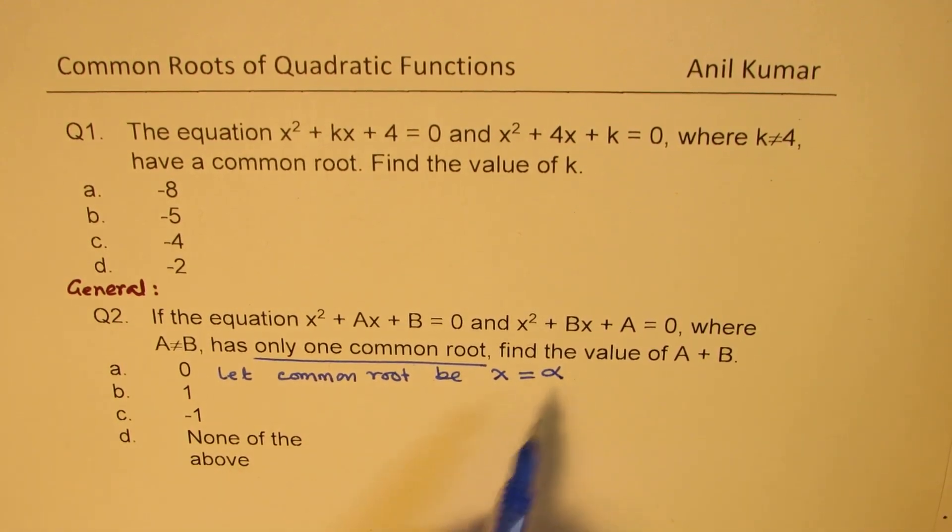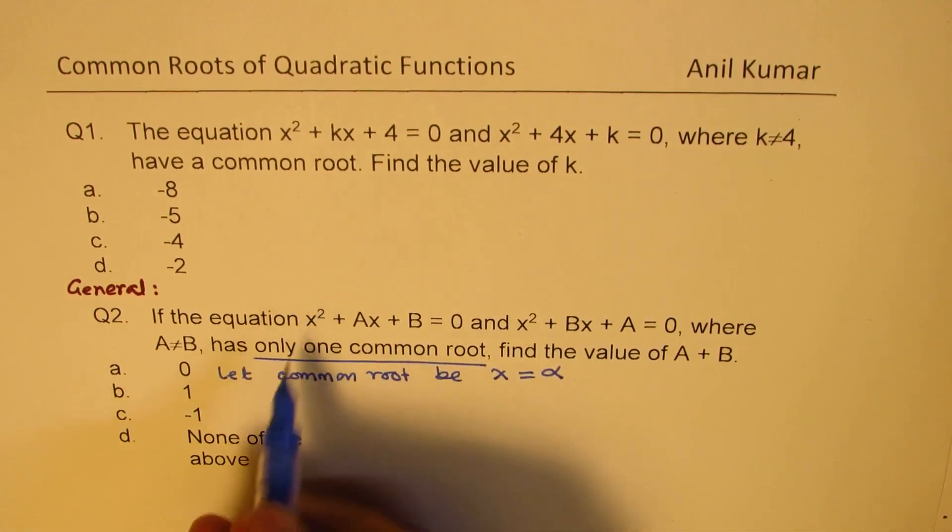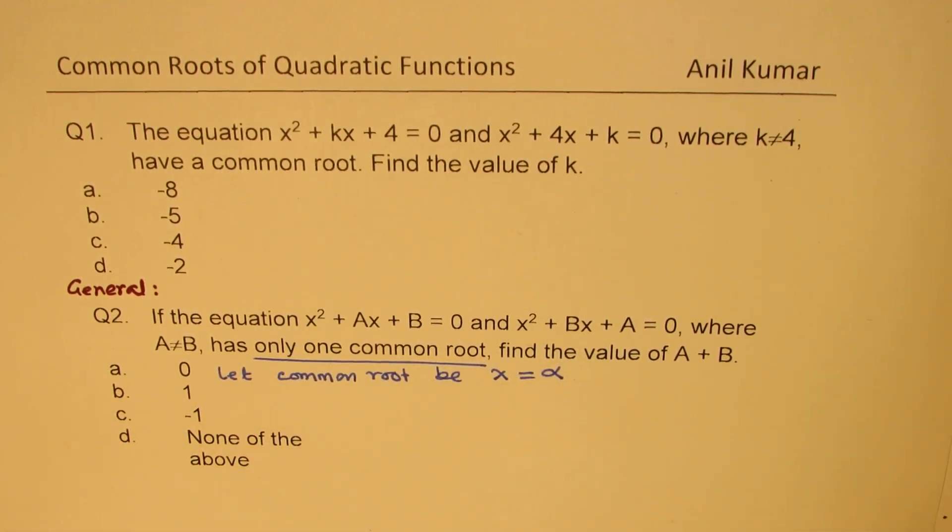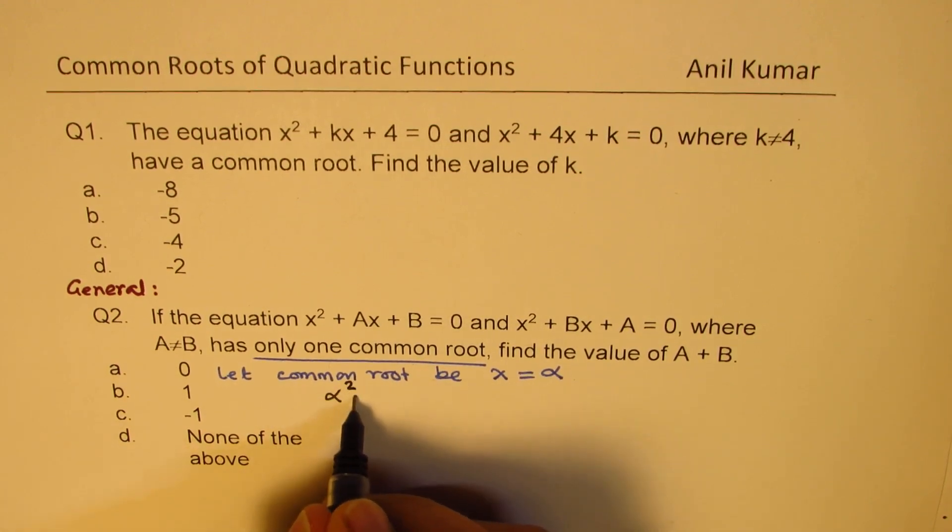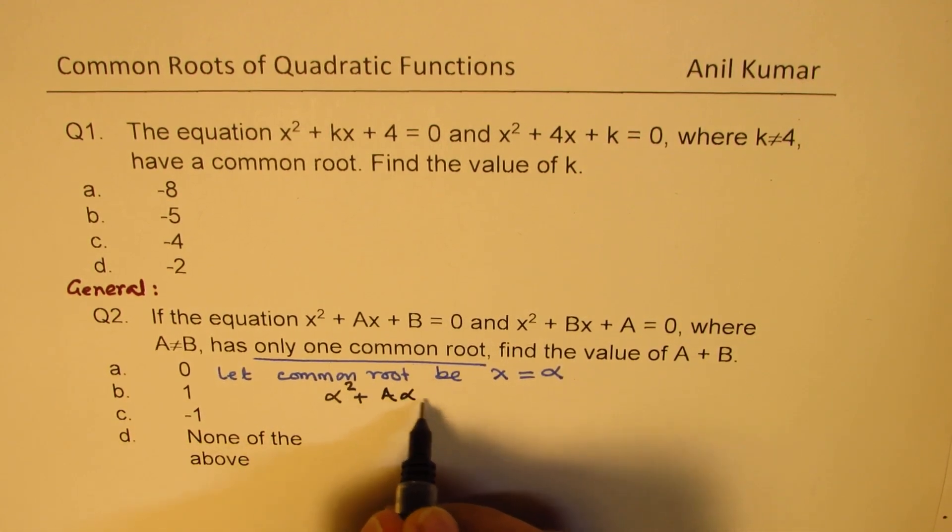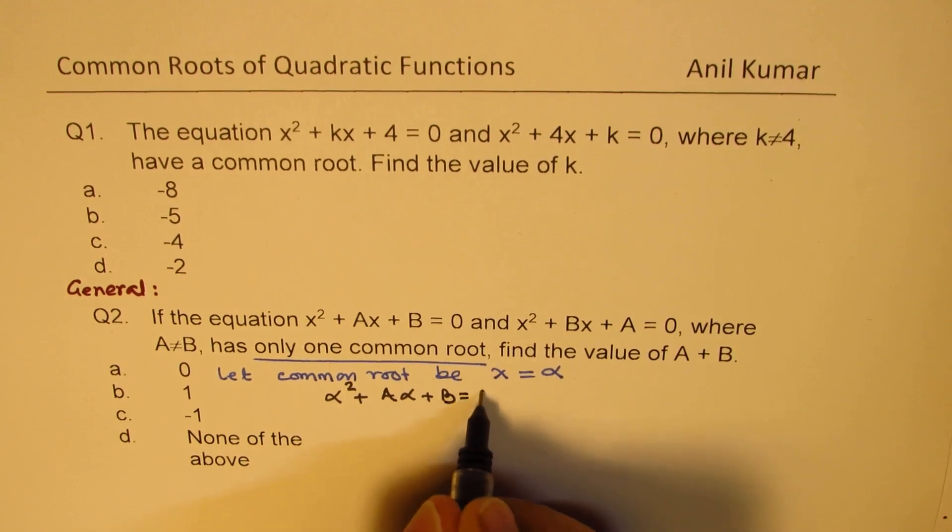So we will just use this value α for x. So both the equations will be satisfied with this value. And therefore, we have our equations as α² + aα + b = 0.